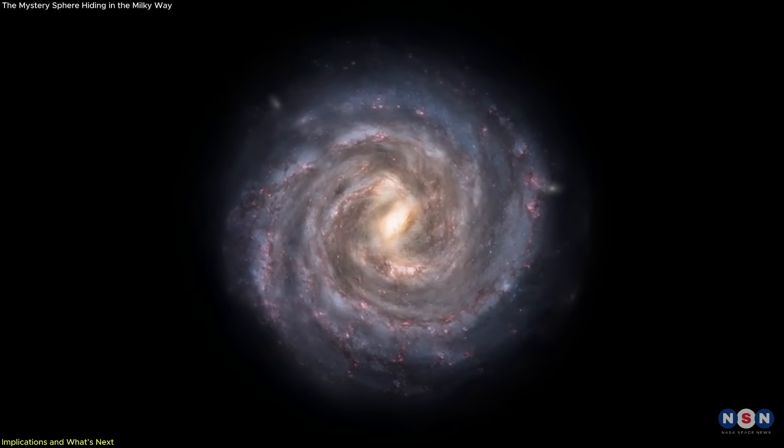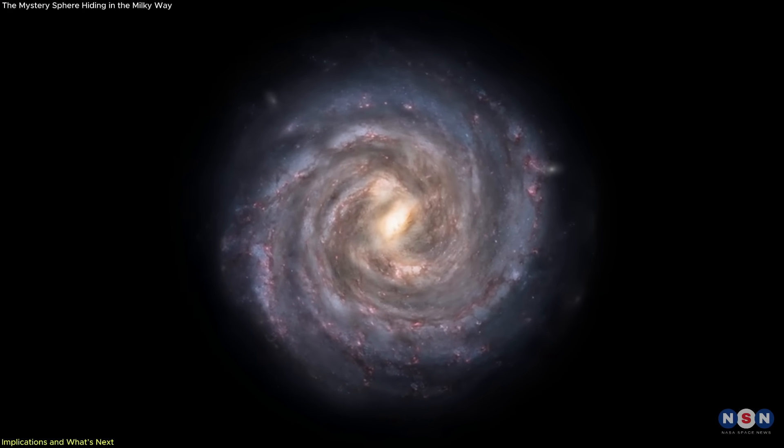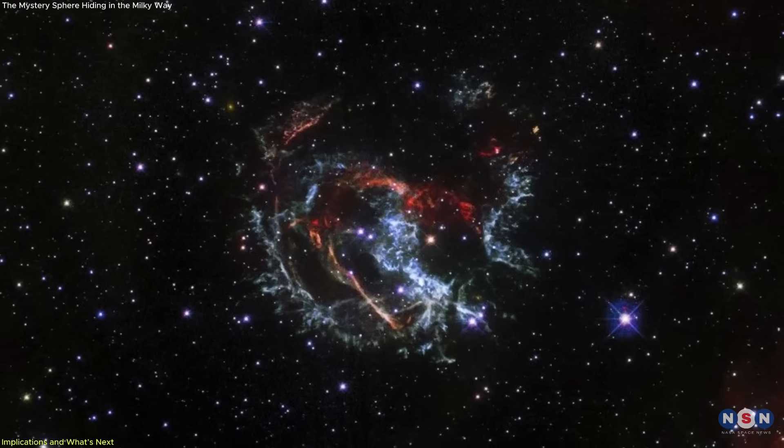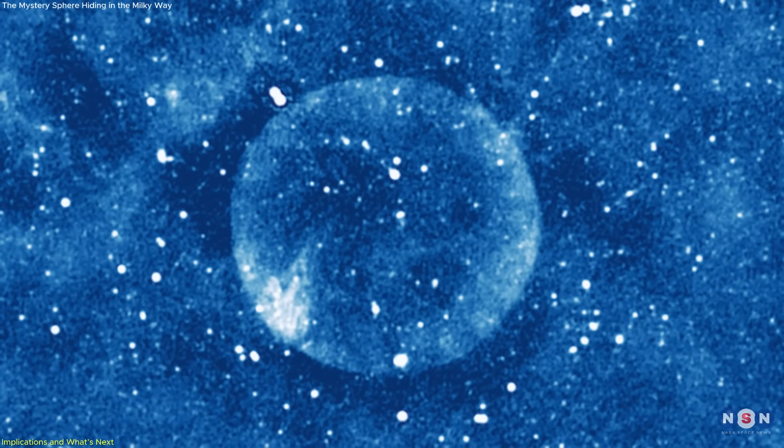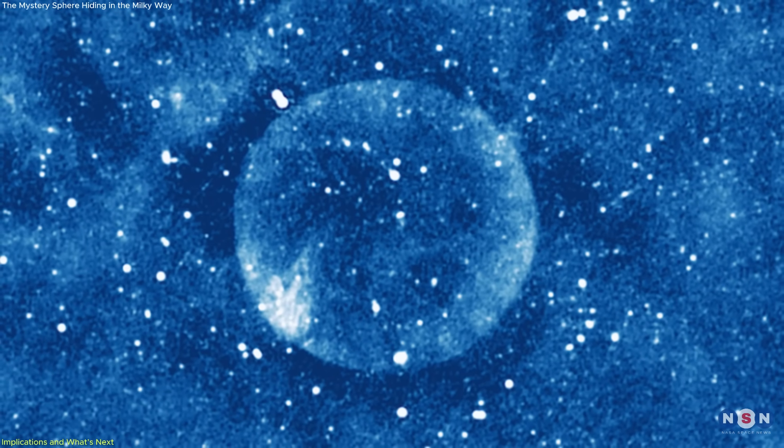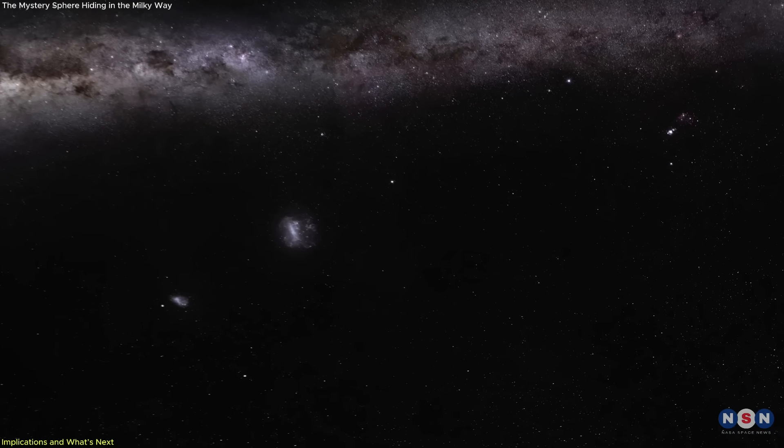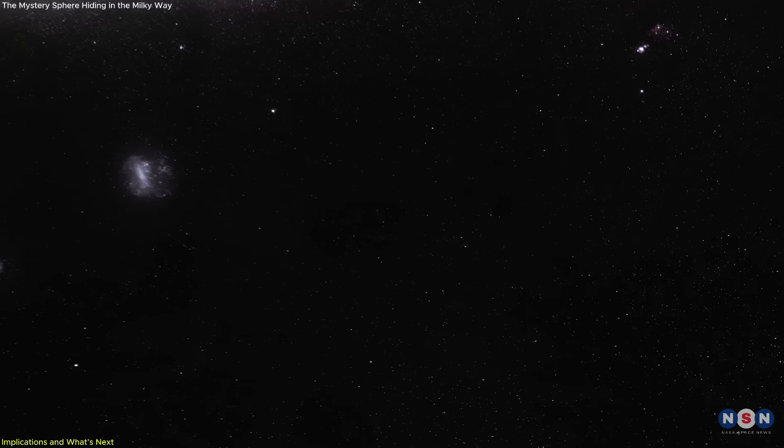Already, astronomers suspect that hundreds of supernova remnants remain unidentified in the Milky Way. Some may be faint, broken, or hard to spot. But others might be surprisingly well-preserved, like Teleos, hidden by distance, wavelength limitations, or our own expectations.